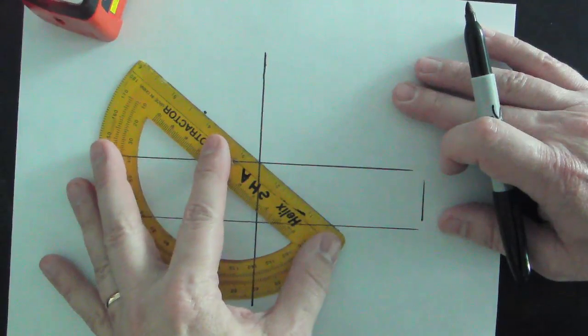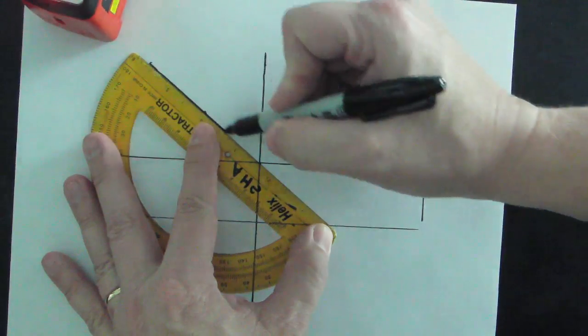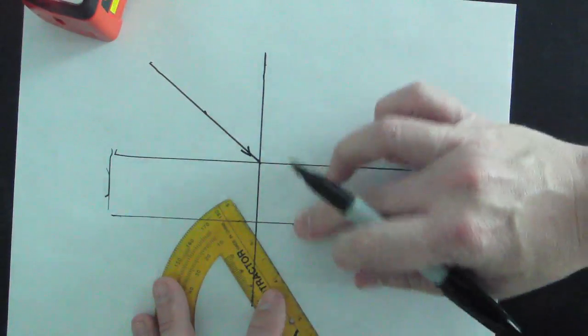Then I'll take the protractor and make my marks. So this is going to be the incident light ray coming in here. So that's the beam that's coming into the glass. And right here, this would be the refracted light ray.